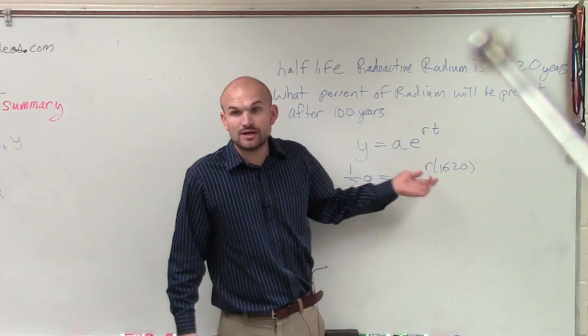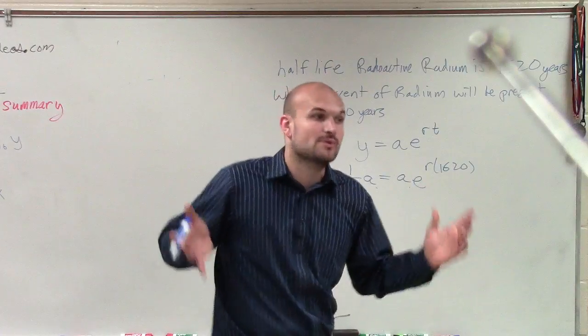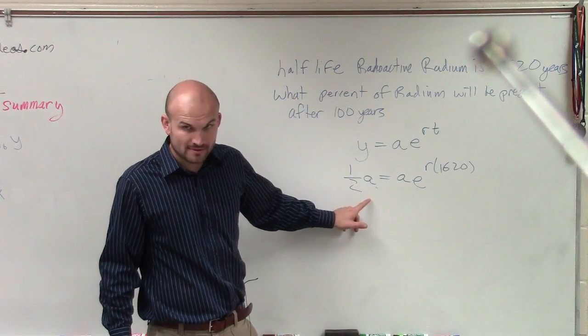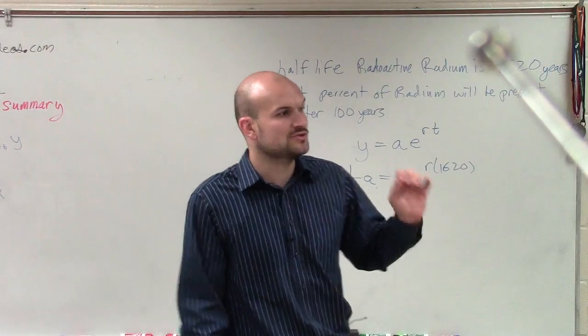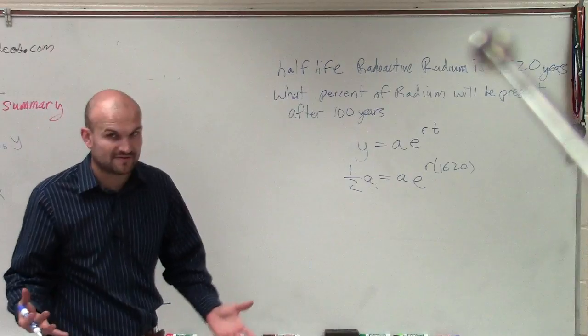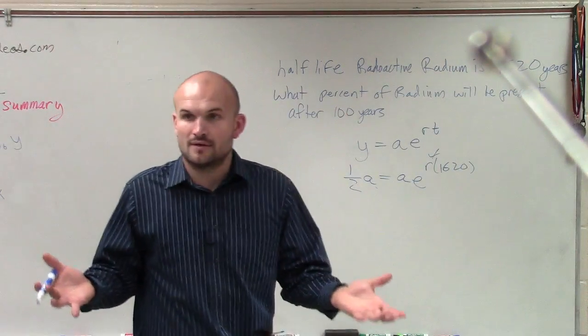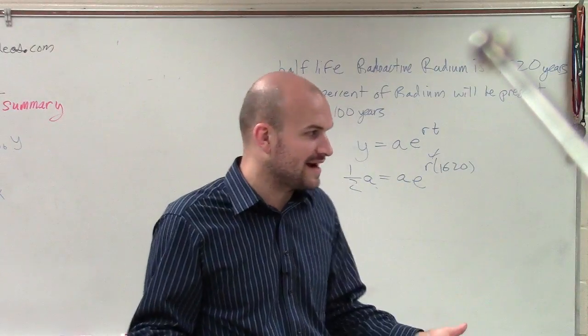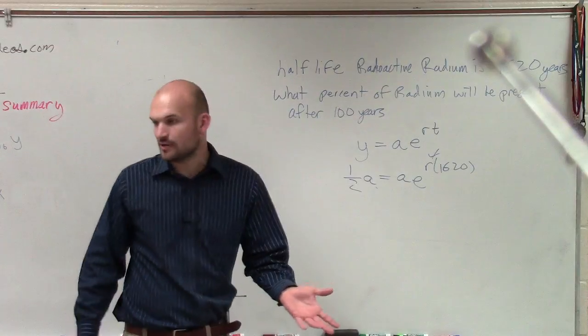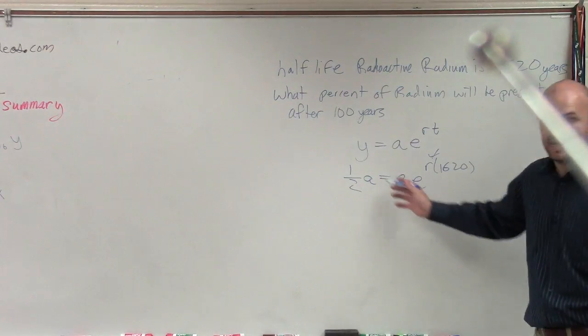The problem is we don't know how that is decreasing. All we know is after 1,620 years, our initial amount, we're going to have half of it, right? So what we need to do to be able to solve how much we're going to have in 100 years or the percent we're going to have left in 100 years is we need to figure out how is this radium decreasing, right? What is this rate that we are finding? So I need to solve for r. Now you say, well, I have two variables. I have an a and an r.